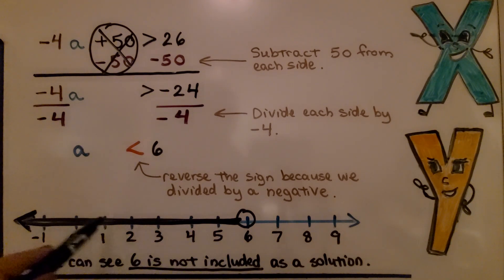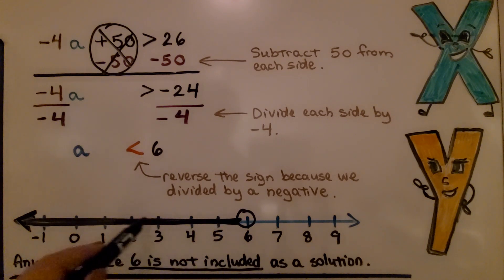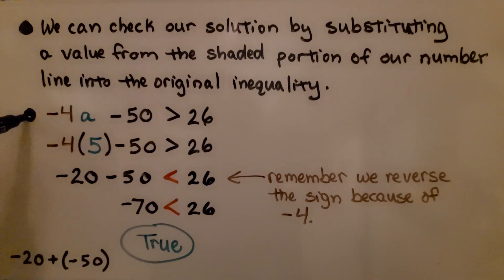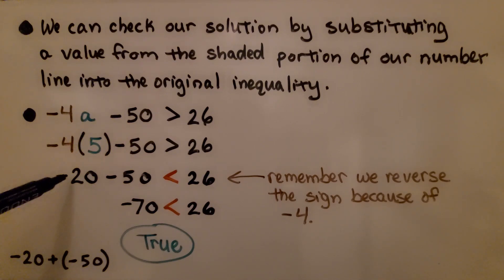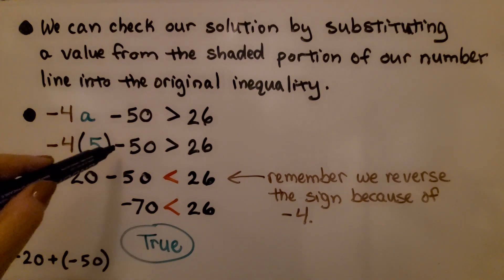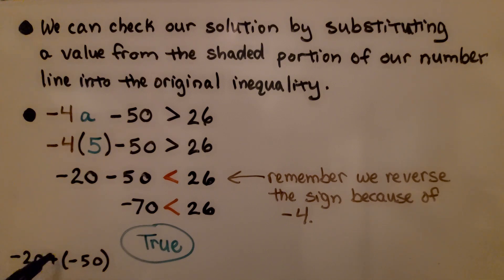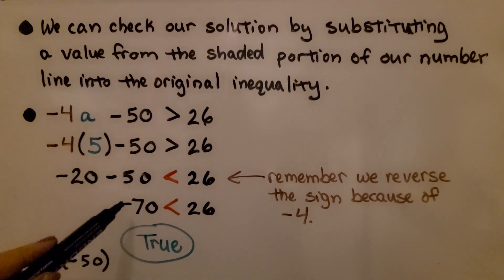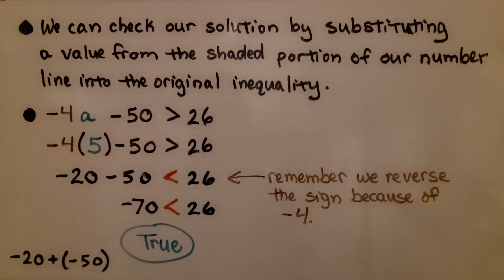We can check our solution by substituting a value from the shaded region into the original inequality. Since anything less than 6 should work, let's choose 5. Substituting: negative 4 times 5 equals negative 20, and negative 20 plus a negative 50 gives negative 70. After reversing the sign due to the negative coefficient, we get negative 70 is less than 26, which is true. So 5 is a valid solution for a.